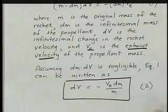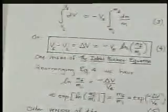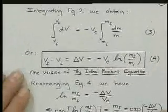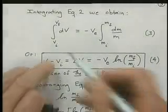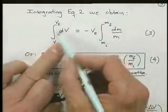Now we're going to integrate equation two. We'll slap some integral signs on it, and we're going to integrate from V initial to V final, dV.